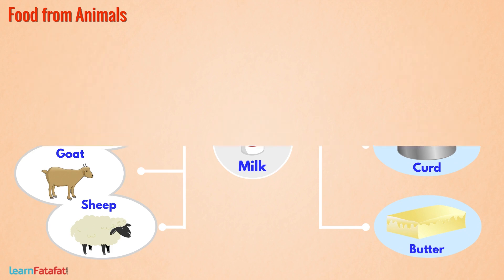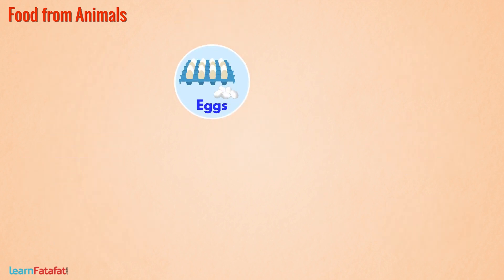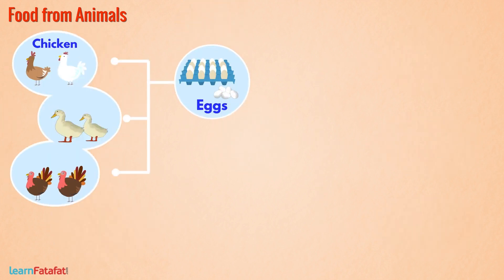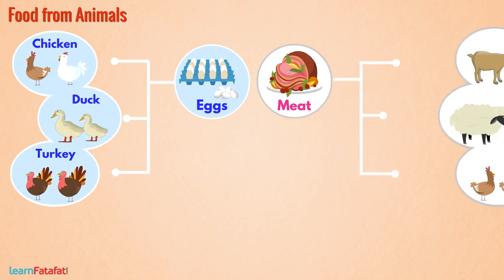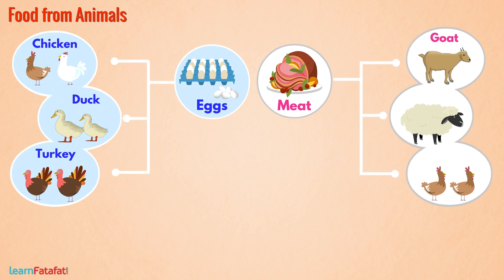We obtain eggs from chicken, duck, turkey, etc. We obtain meat from goat, sheep, chicken, etc.